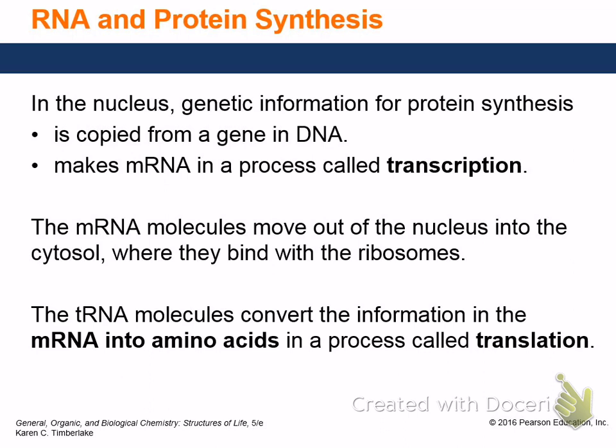In the nucleus, genetic information is copied from a gene — the DNA makes mRNA, which is called transcription. mRNA molecules move out of the nucleus into the cytosol, where they bind with the ribosome and the tRNAs come in and pair with the mRNA. The translation process takes place, those amino acids are put together, and you end up with a protein.